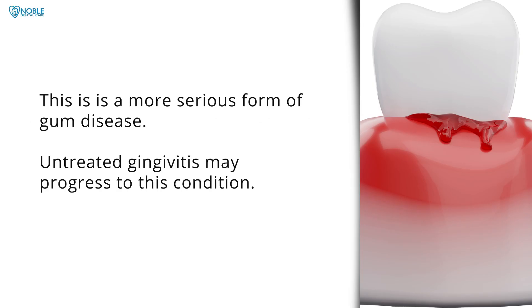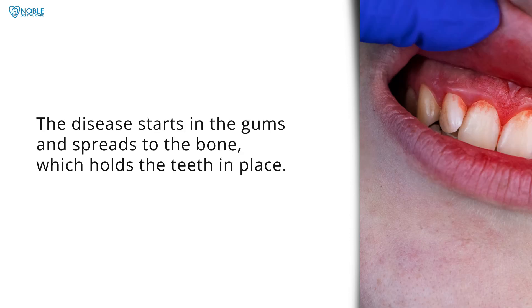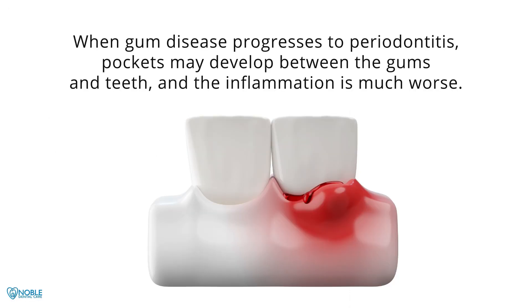Periodontitis. This is a more serious form of gum disease. Untreated gingivitis may progress to this condition. The disease starts in the gums and spreads to the bone which holds the teeth in place. When gum disease progresses to periodontitis, pockets may develop between the gums and teeth and the inflammation is much worse.